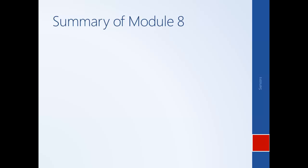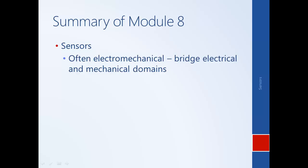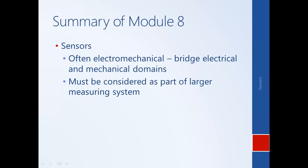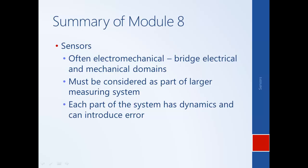This brings us to the conclusion of Module 8. In this module, we discussed sensors — in particular, examples of electromechanical sensors that bridge the electrical and mechanical domains of our control system. We also talked about how they must be considered as part of a larger measuring system, that sensor output may need to be processed, and that it may need to generate an output or be read into a computer. Each stage of this measuring system has dynamics and can introduce error. We discussed several examples of signal processing — numerical integration, differentiation, and analog-to-digital conversion — and how each specifically introduces error that we must be careful about in our larger control system.